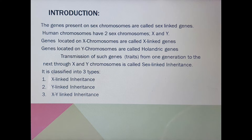Genes located on X chromosomes are called X linked genes, and that inheritance is called X linked inheritance. Genes located on Y chromosomes are called holandric genes — holandric comes from 'holos' and 'andros', meaning related to male, because the Y chromosome is only present in males. The transmission of such genes from one generation to the next is called sex linked inheritance.